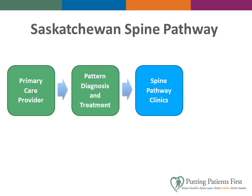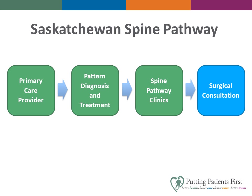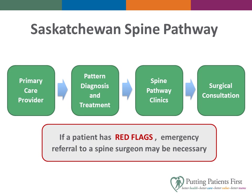There may be times when patients do not respond to treatment by the primary care provider and referral to the Regina or Saskatoon Spine Pathway Clinic is required. Clinic wait times are regularly evaluated with the goal of keeping wait times less than three weeks. At the clinic, health providers further assess patients, confirm diagnoses, and identify ongoing treatment options. When appropriate, patients may be referred for MRI and reviewed by a spine surgeon. If a patient has red flags, it may be necessary to refer them directly to the spine surgeon on call. However, for non-emergency referrals, the spine pathway process has been proven to shorten wait times and improve appropriateness compared to conventional referral processes.